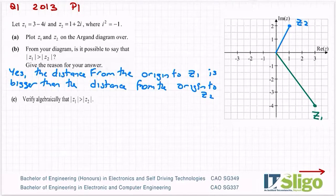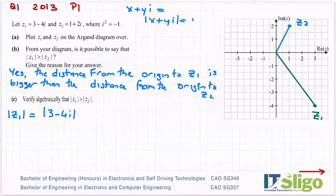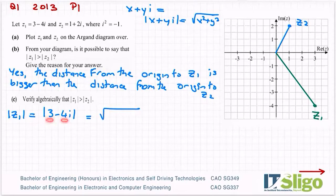Verify algebraically that the modulus of z1 is greater than the modulus of z2. So the modulus of z1 is the modulus of 3 minus 4i. Remember any modulus, if you have a complex number x plus yi, then the modulus of x plus yi is square root of x squared plus y squared. You have to know that. So in this particular case, that's my x, that's my y. So it's 3 squared plus minus 4 squared, which is 3 times 3 is 9 plus 16, so square root of 25. So I'm going to get 5 for that particular one.